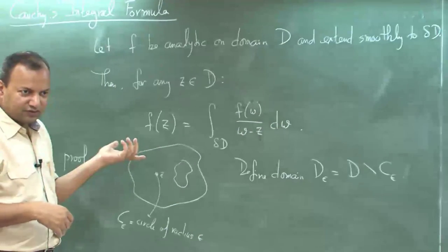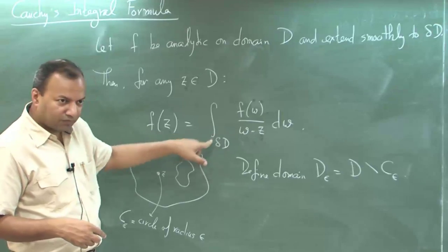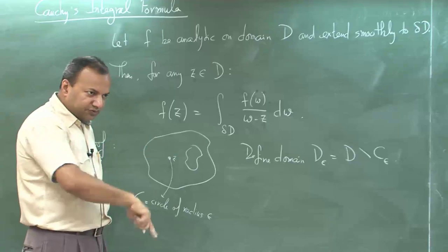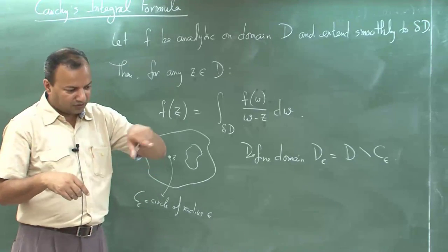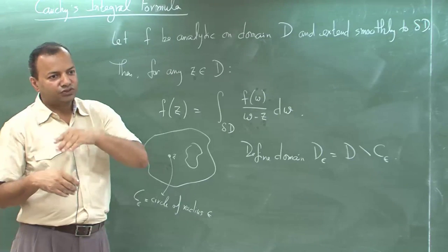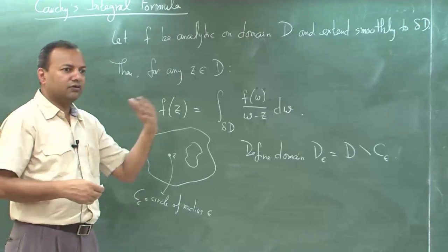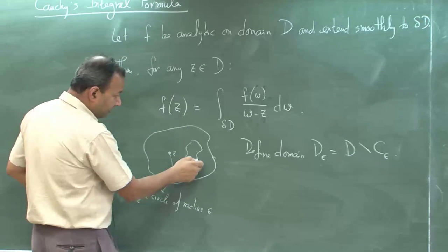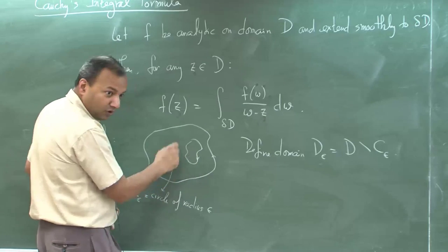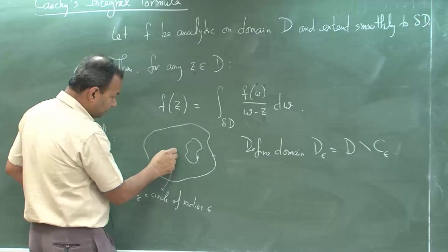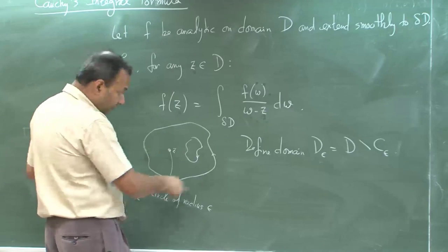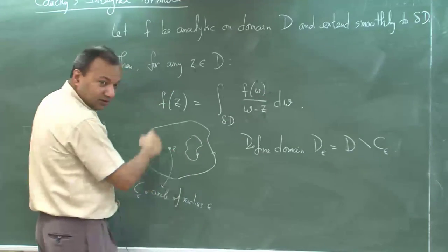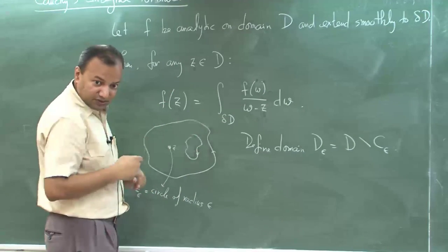That is the positive way of traversing. Whenever we integrate over the boundary of a domain, we integrate over all the curves defining the boundary in such a fashion that points inside the domain are on your left. So, for example, this outer traversal will be counterclockwise, and the traversal of the inner circle C_ε would be in the opposite direction — clockwise.